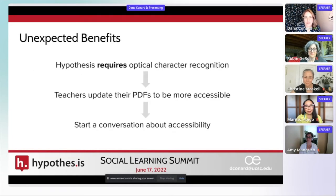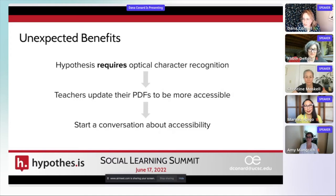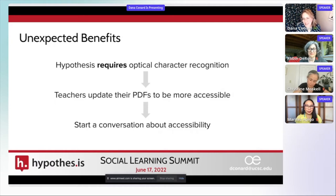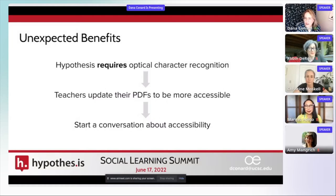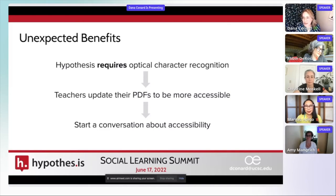My last slide is the unexpected benefits of Hypothesis. I wanted to share how Hypothesis has quietly pushed accessibility in a really good way. Since Hypothesis requires optical character recognition and instructors mostly didn't know what that meant, I had to figure it out and do it for them. This was my first step into document remediation. At first I was only doing OCR because that's all Hypothesis required, but I've learned so much more now about document remediation and accessibility. Now I'm not just doing OCR, but doing tags and reading order and appropriate metadata, and all of the files are far more accessible than what they had before.